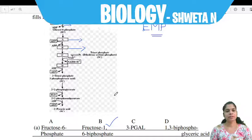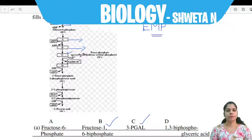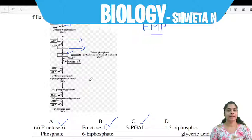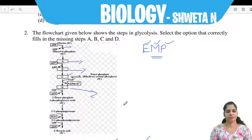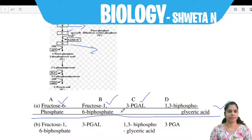Fructose-1,6-bisphosphate then forms a 3-carbon compound, 3-phosphoglyceraldehyde (3-P-GAL), also known as 3-phosphoglyceric acid or 3-phosphoglycerate. This is further converted into 1,3-bisphosphoglyceric acid. This is the correct answer.